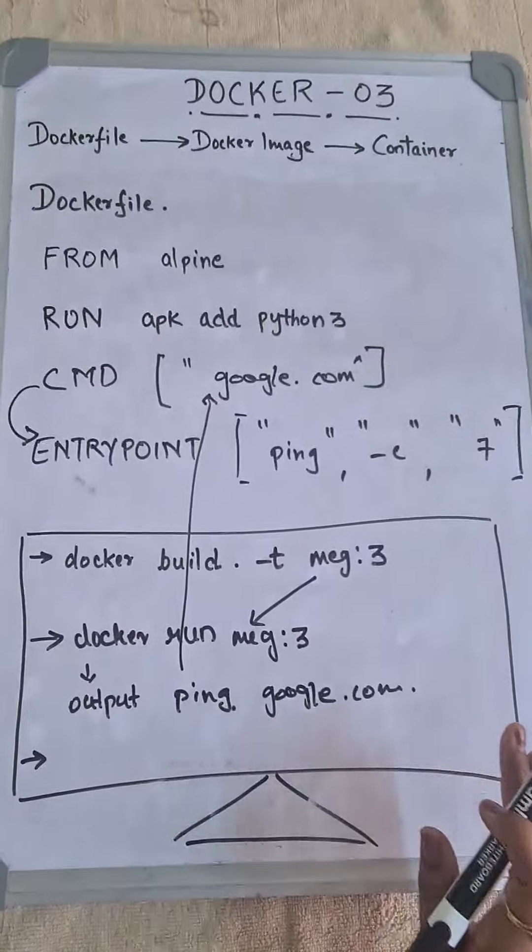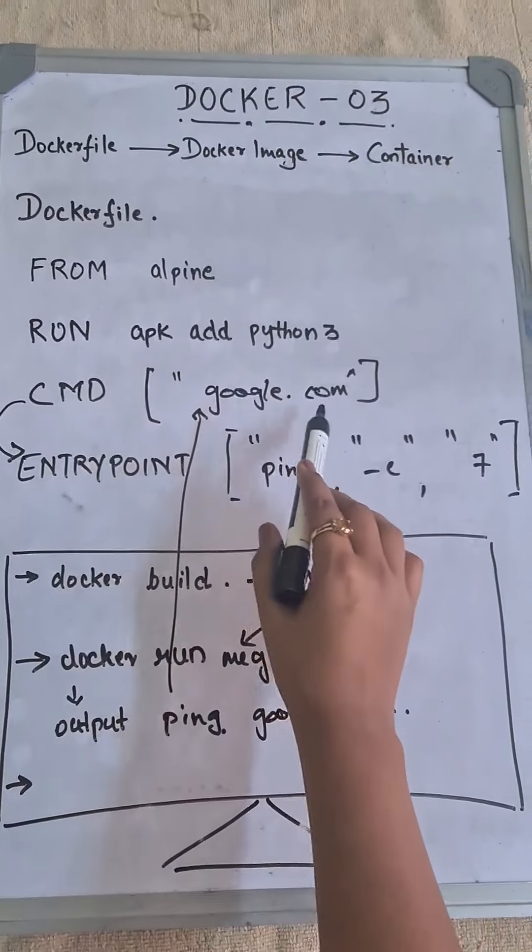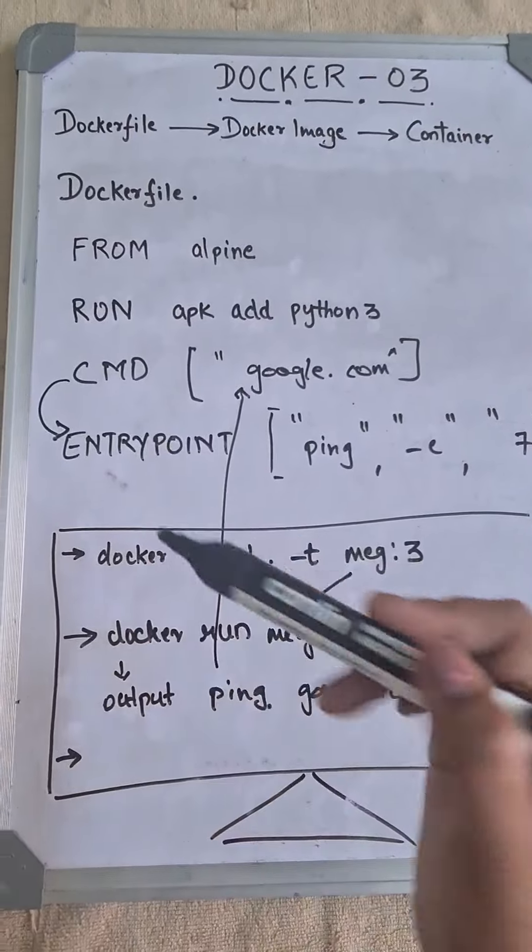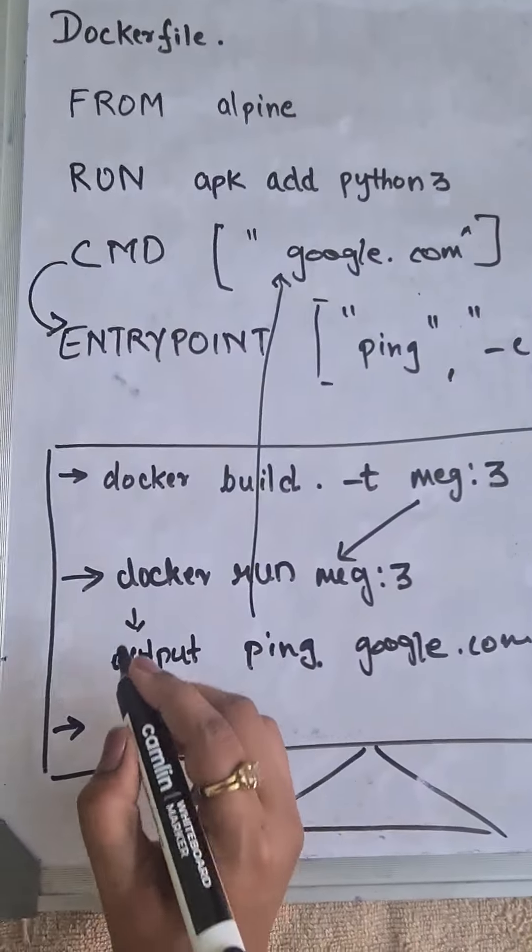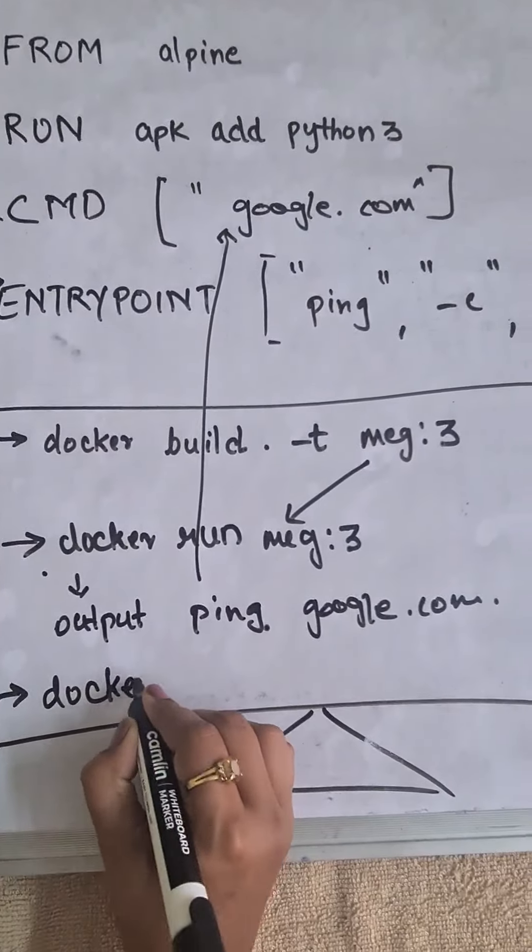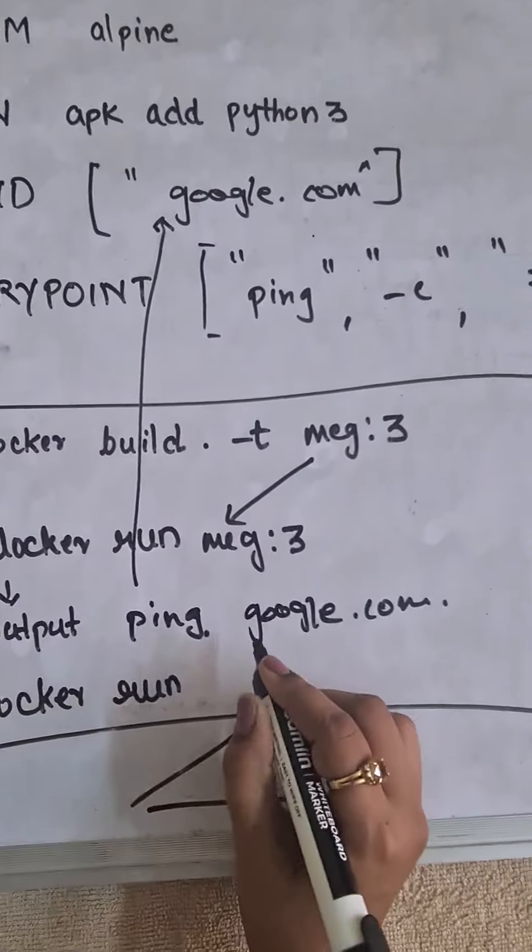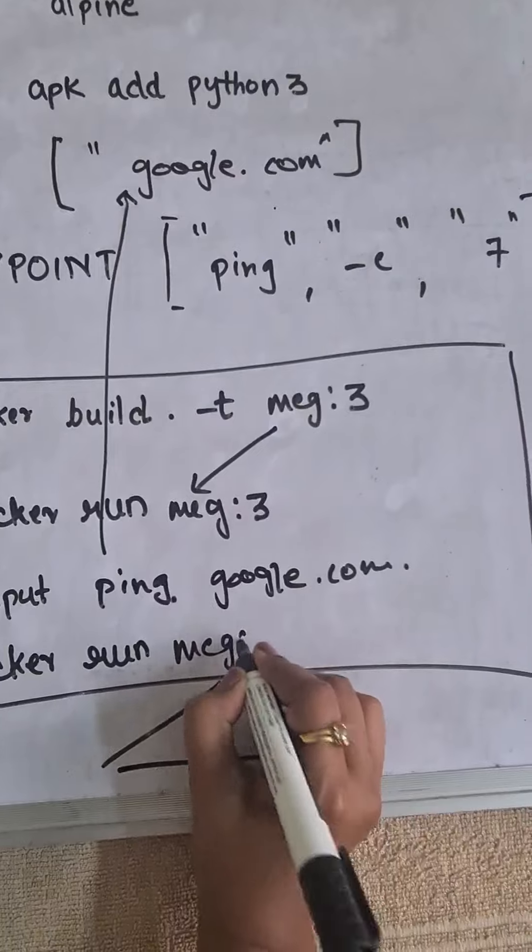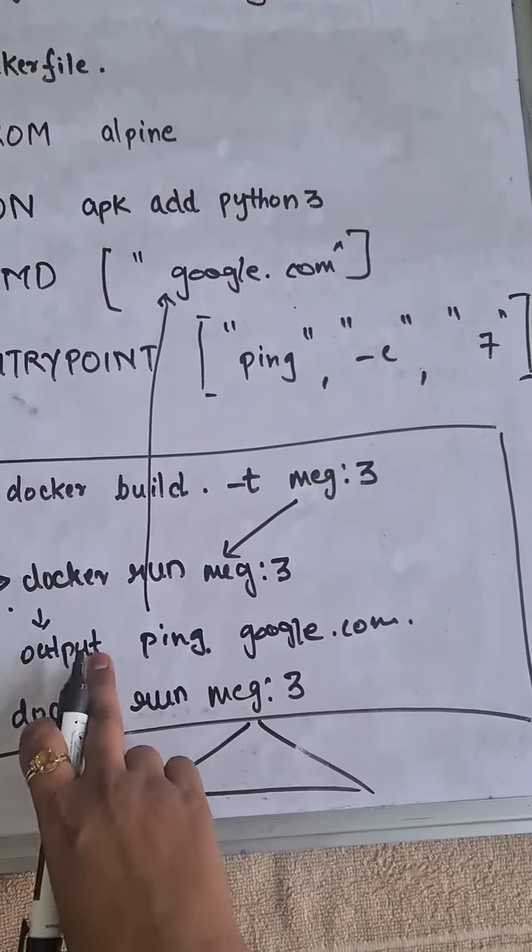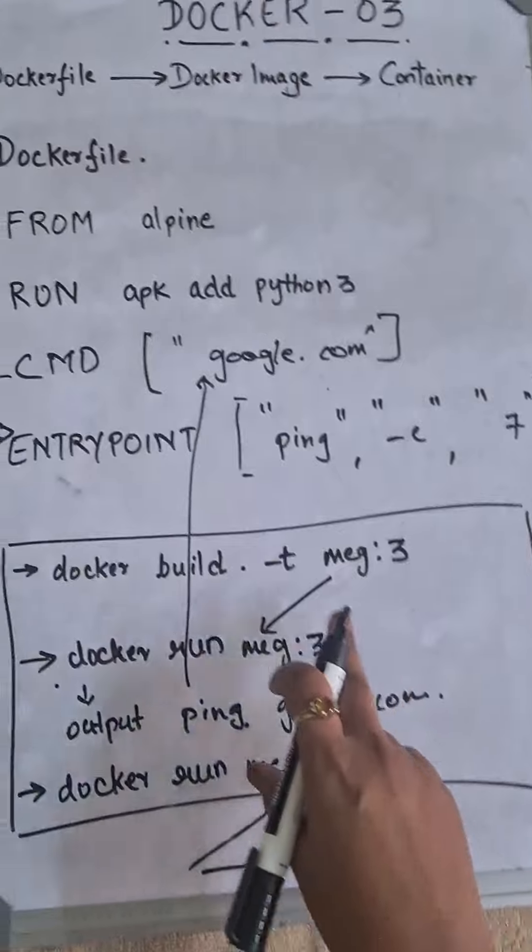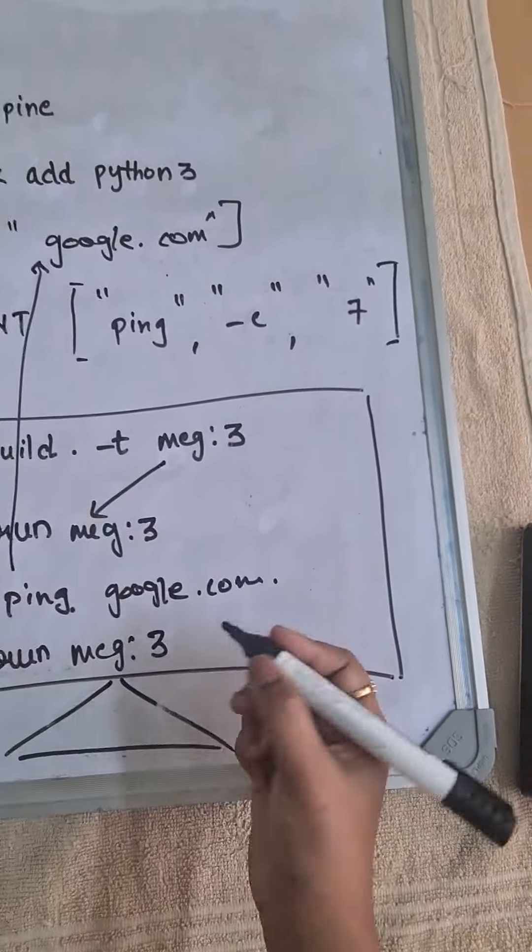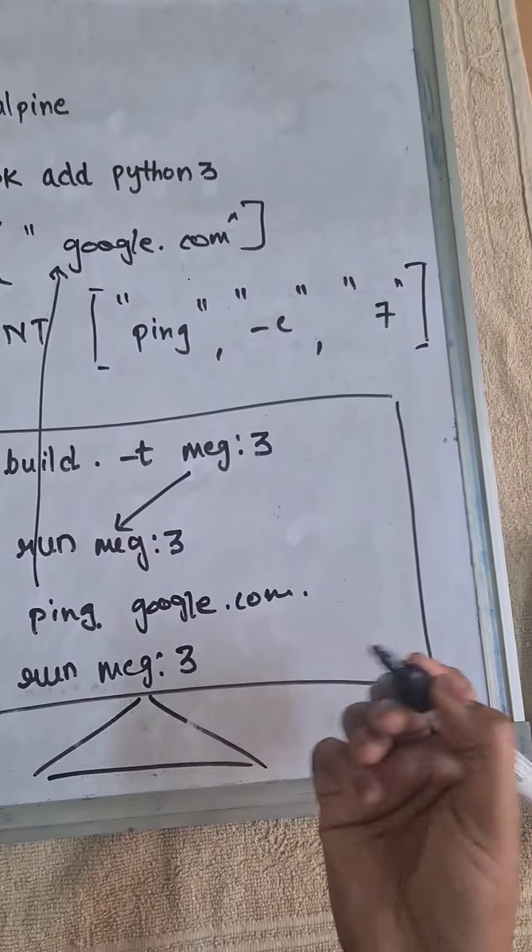We can also override the CMD google.com that we are passing as an argument to ENTRYPOINT, and we can do that with the help of the command itself. So just copy this entire command: docker run and the image name meg:3. So right now it was pinging google.com because in the CMD we are passing google.com. Let me change it to some other argument.